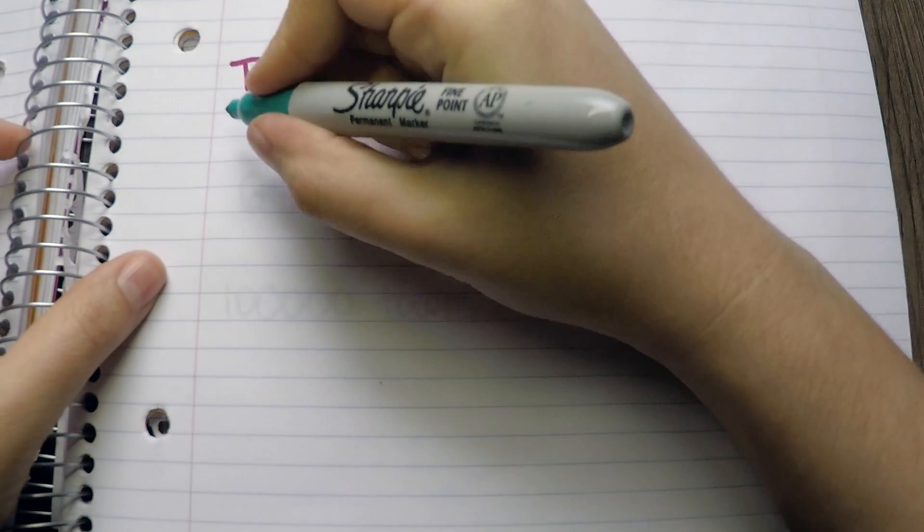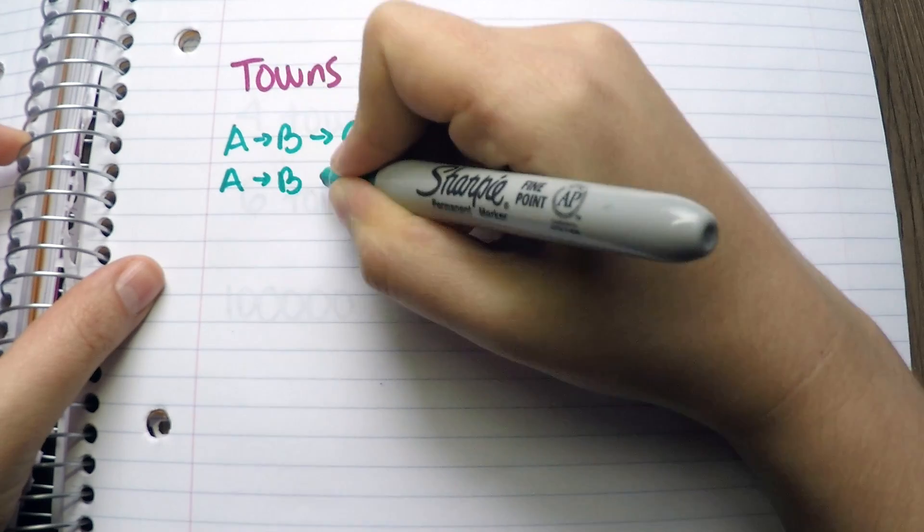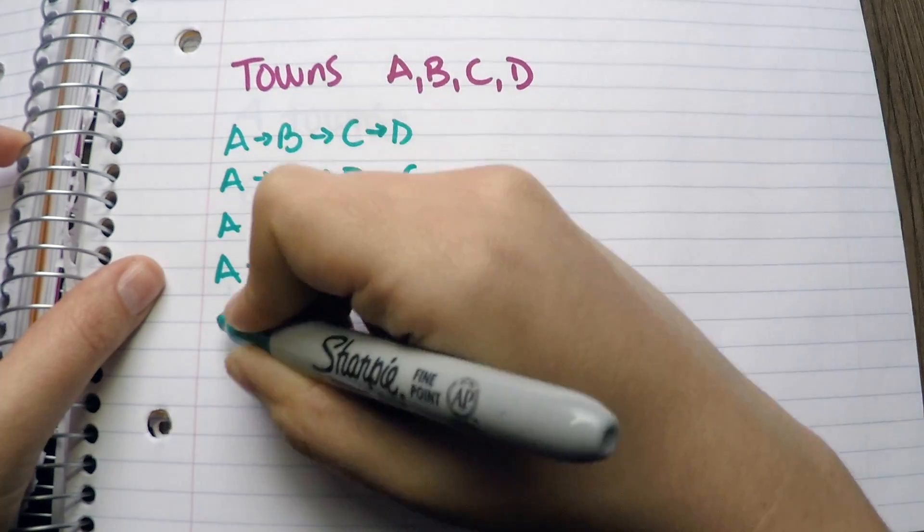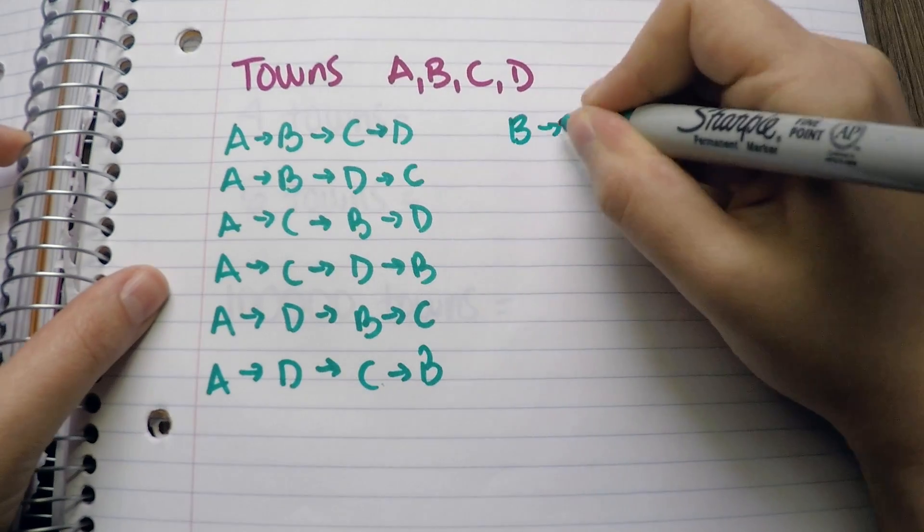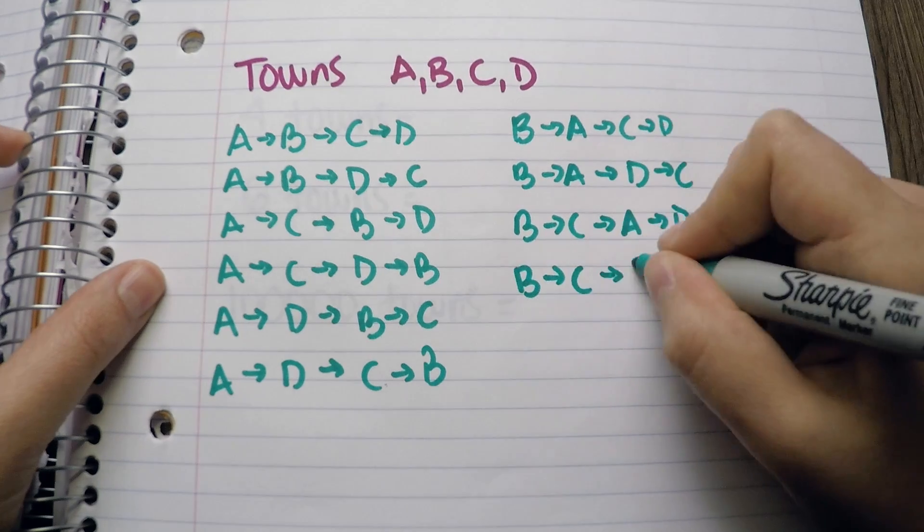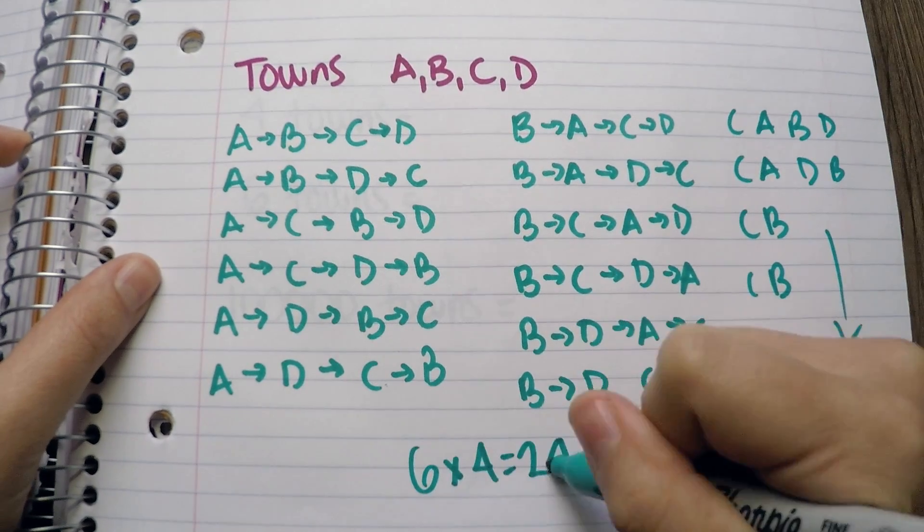But what happens when we add another town? The salesman could go to A, B, C, D, A, B, D, C, and so on. Our possibilities will increase four times. The salesman will have 24 options with 12 unique ones.